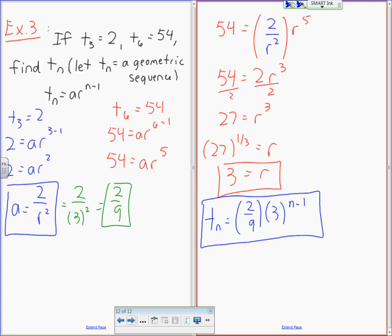So what I did was R was equal to 3 here. So I went back to my A value. A was 2 over R squared. R was equal to 3, so I put it in there, 2 over 3 squared. And then 3 squared is 9, so 2 over 9. And then so I got him. So TN was A, R, N minus 1.